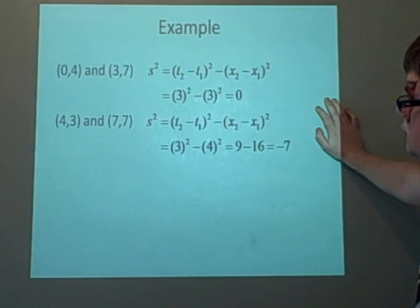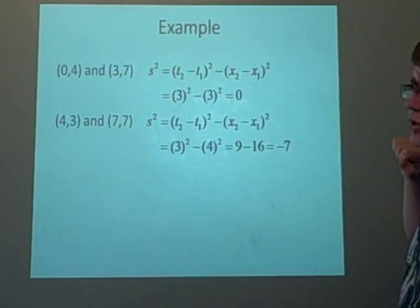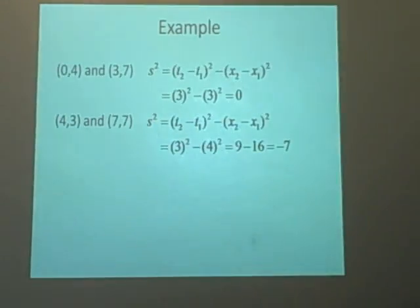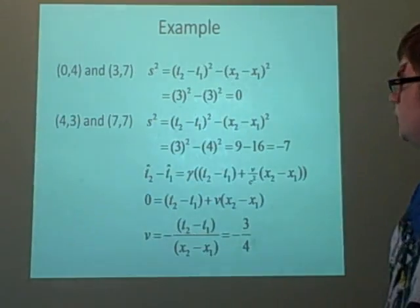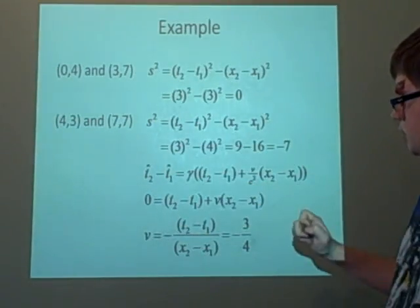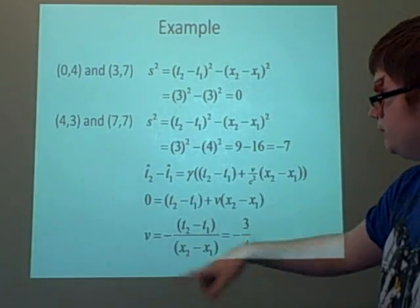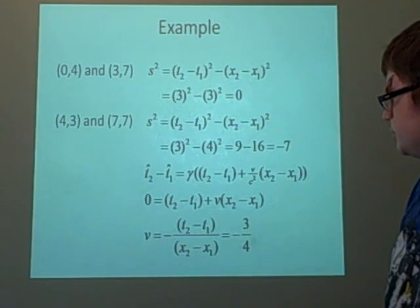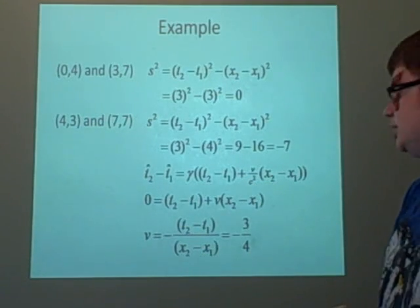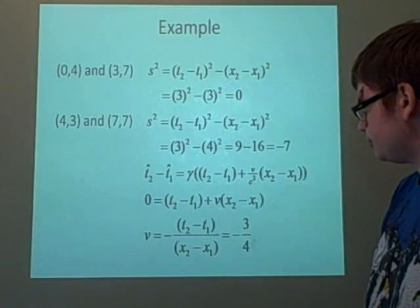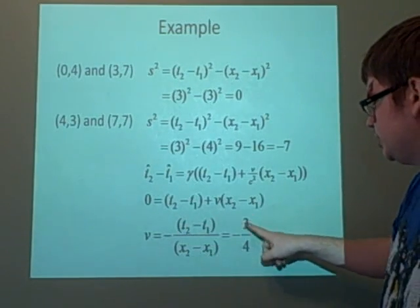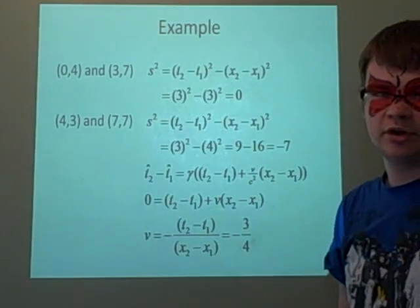Now we substitute t₂-hat minus t₁-hat equals 0 into the Lorentz equation. We can divide by gamma, and since c = 1, we can simplify. Solving for v, we get velocity equals -3/4. I hope that helped.